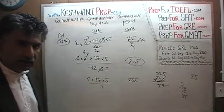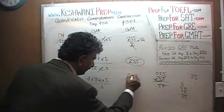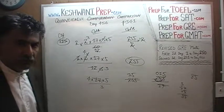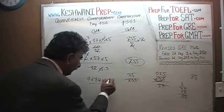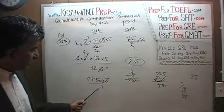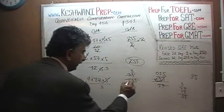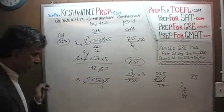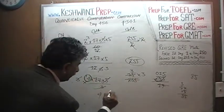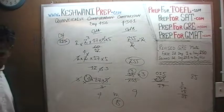We divide both columns by 17: the 17 disappears and 255 becomes 15. Now divide both columns by 5: the 5 disappears and 15 becomes 3. We then get rid of the 3 in the denominator by multiplying both columns by 3 — the 3 in the denominator disappears, leaving us with 4 versus 3 times 3, which is 9. The answer is B.